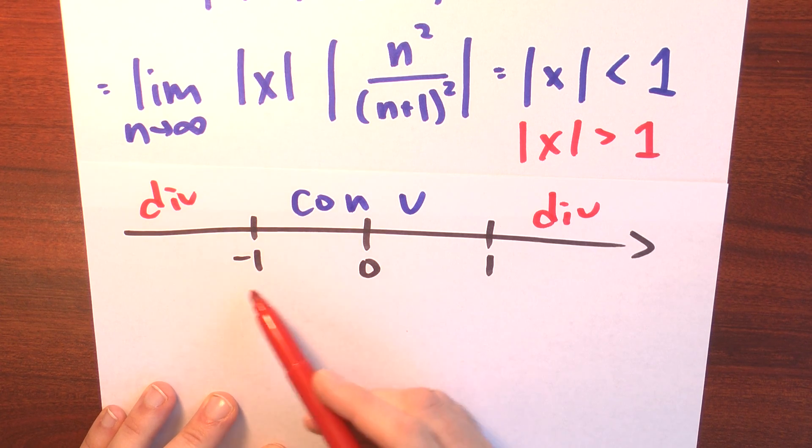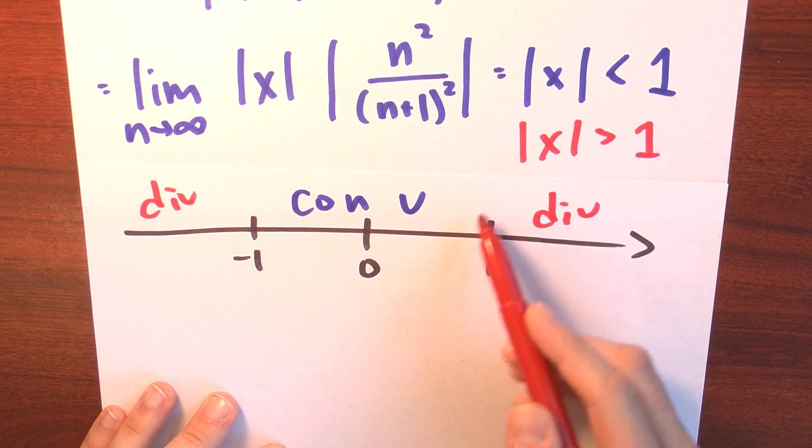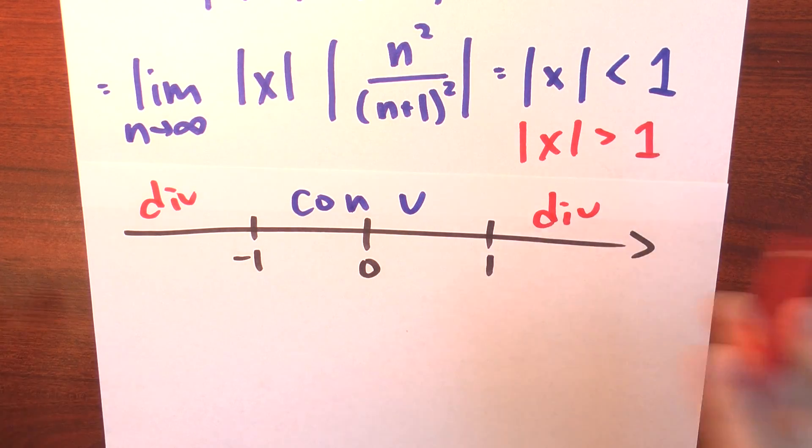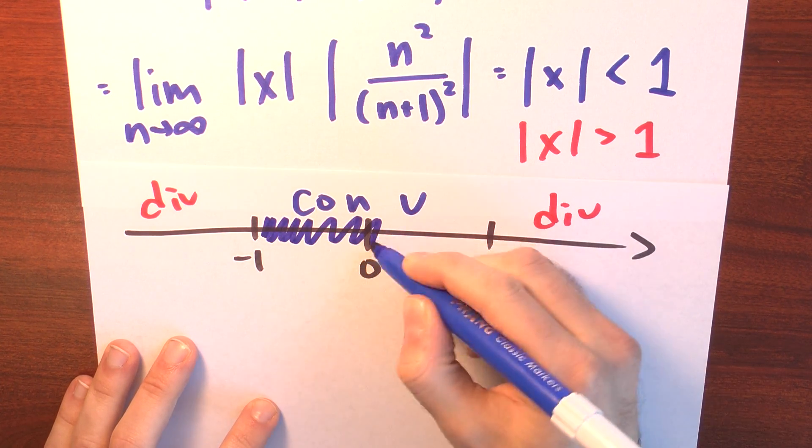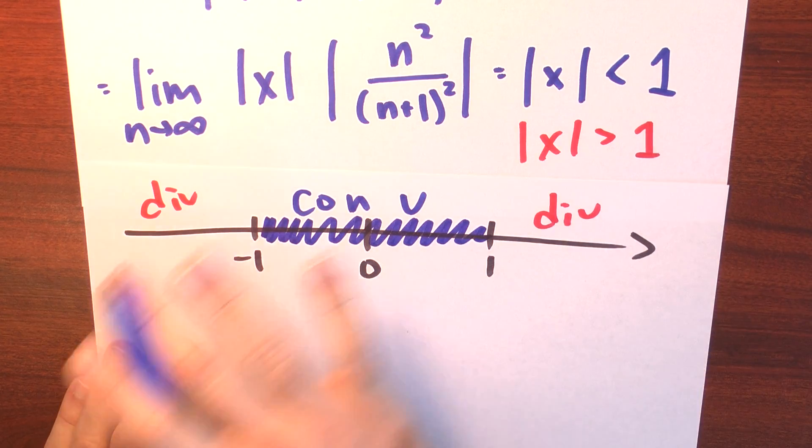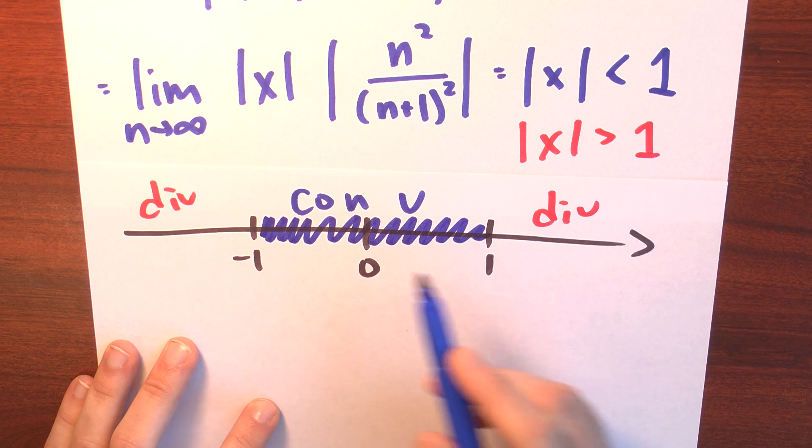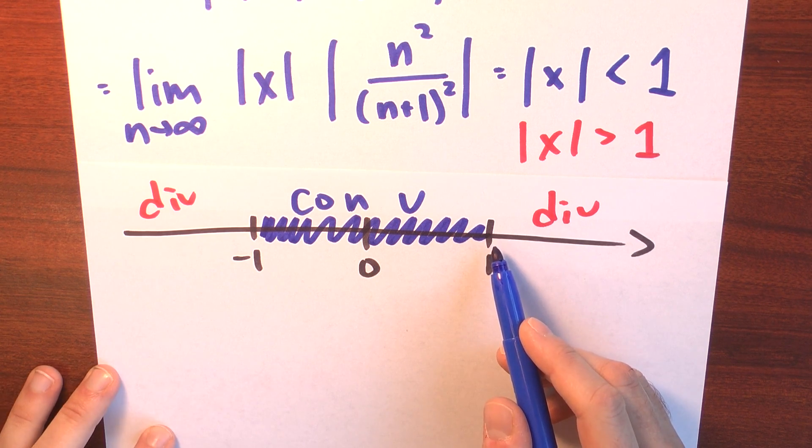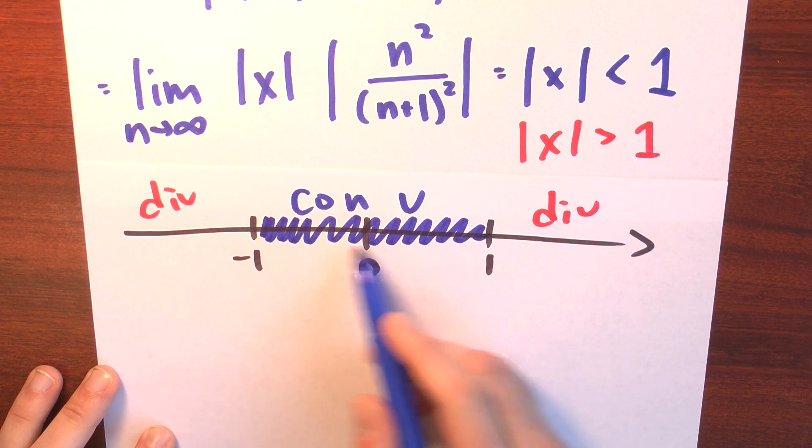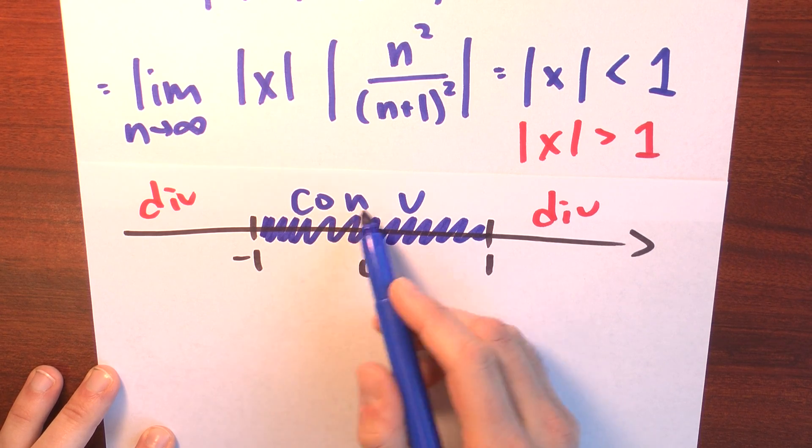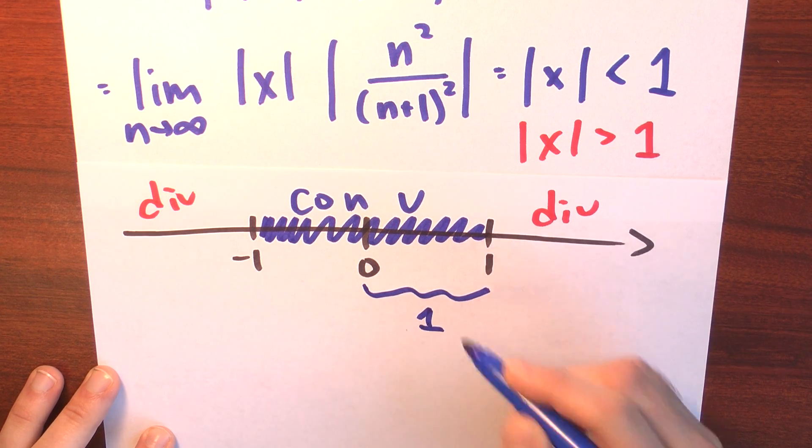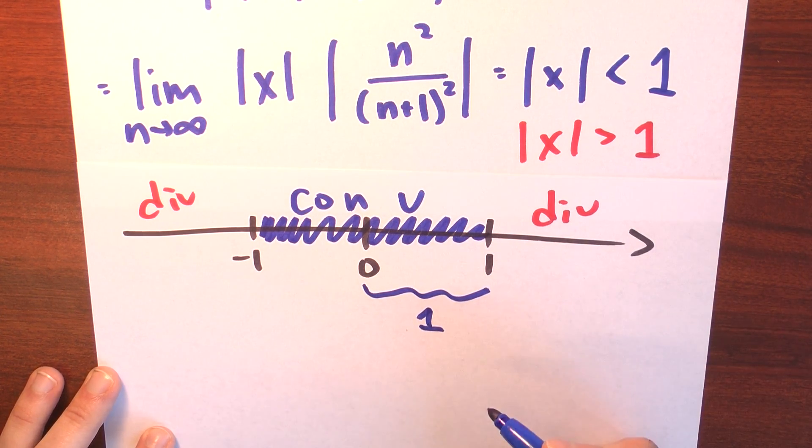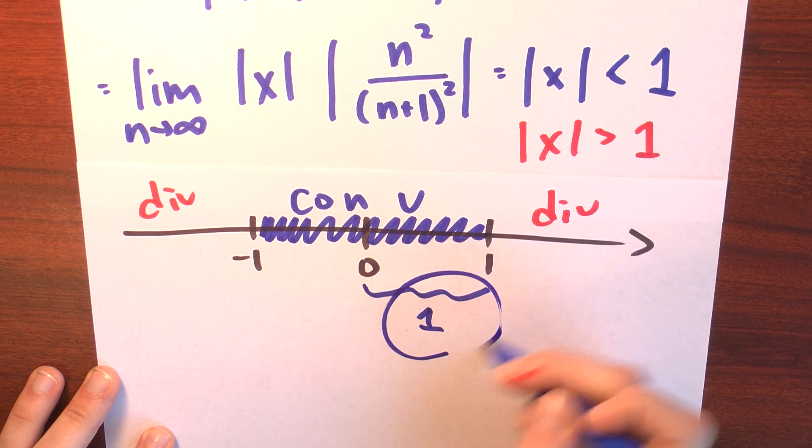Now, admittedly, I haven't thought about what happens at x equals minus 1 and x equals 1. But I don't need to if all I care about is knowing the radius of convergence. I'm thinking about this interval being where the power series converges. And maybe it converges at minus 1, maybe it converges at 1. But what's the radius of this interval? Well, this is an interval centered at 0, and its radius is 1. And that tells me that the radius of convergence is 1.